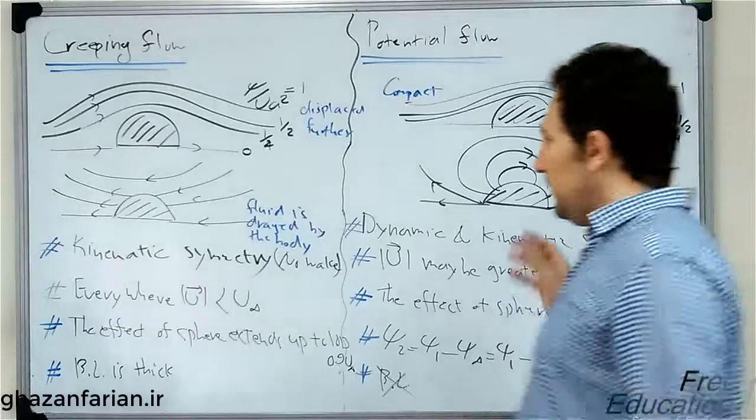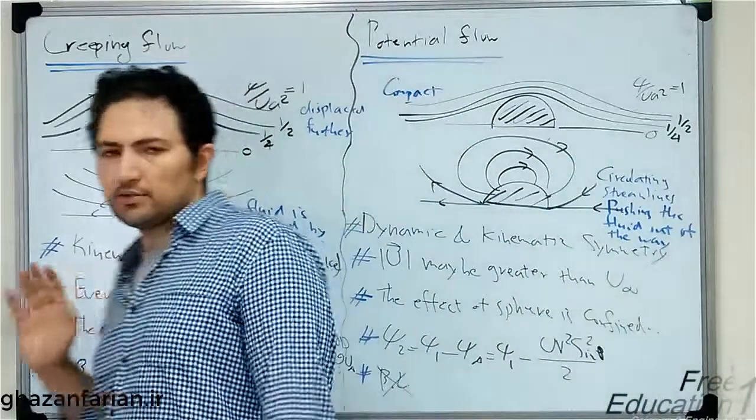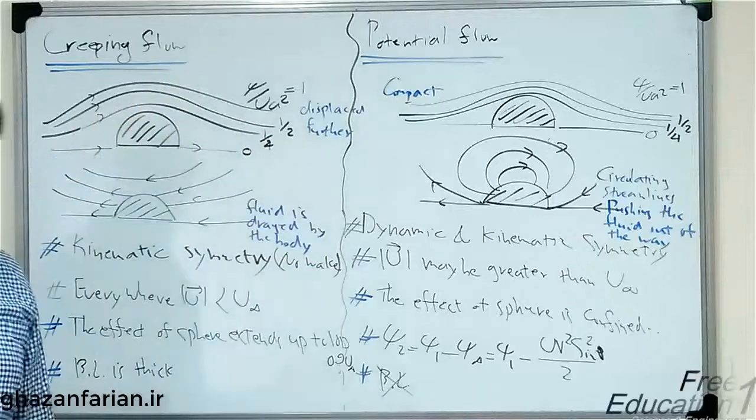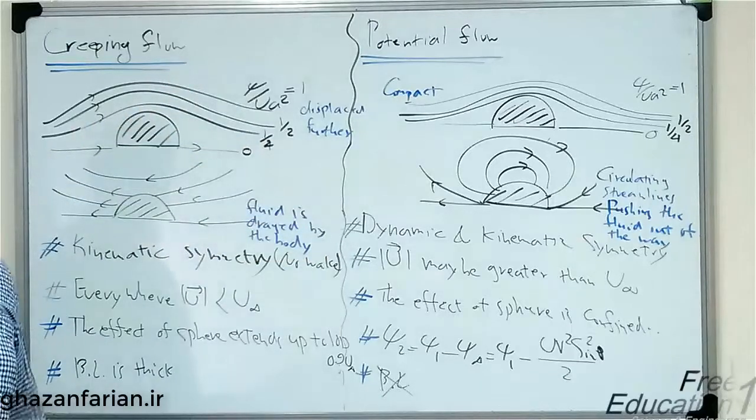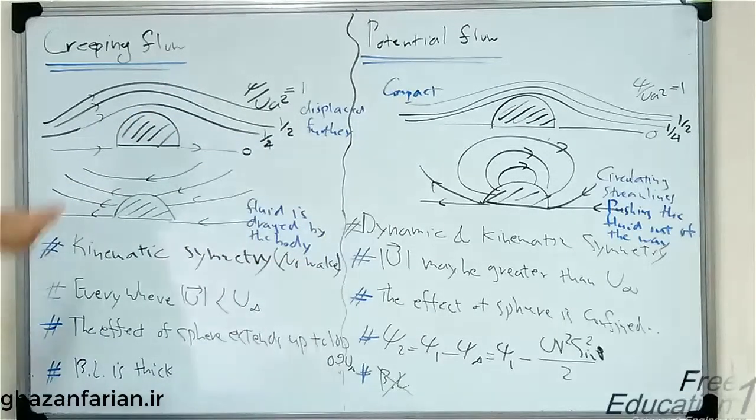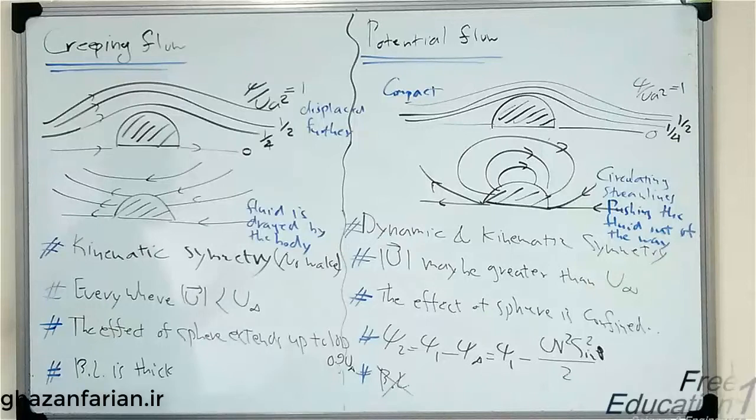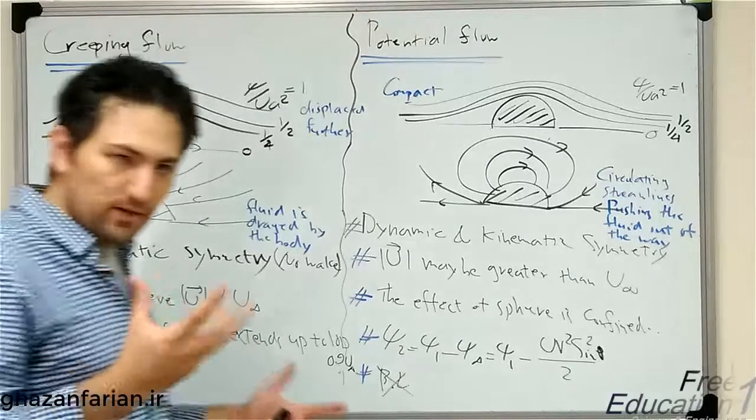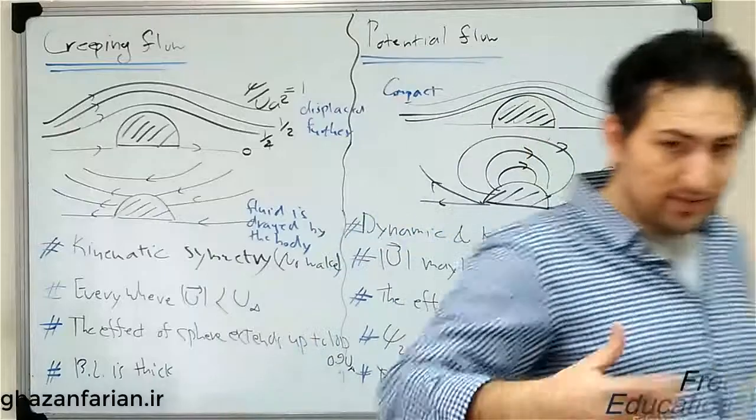For the sake of clarity, in this section I've drawn the streamlines of the potential flow and the creeping flow over a sphere. The first row shows the streamlines with respect to a fixed observer, something similar to an Eulerian viewpoint. The second row shows the differences between these two fluids more distinctly.